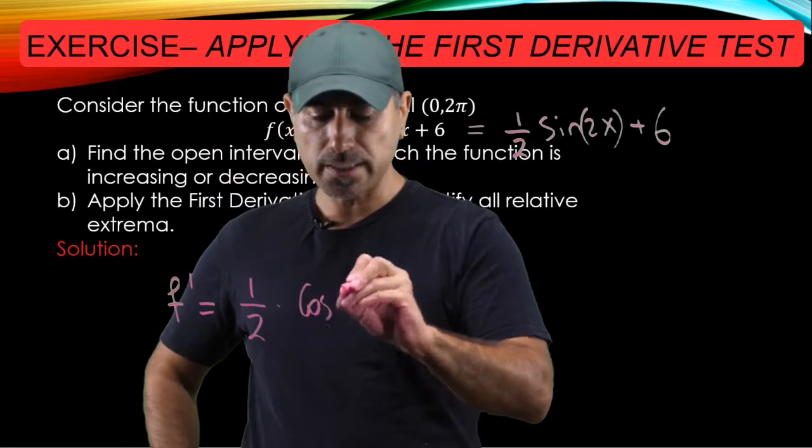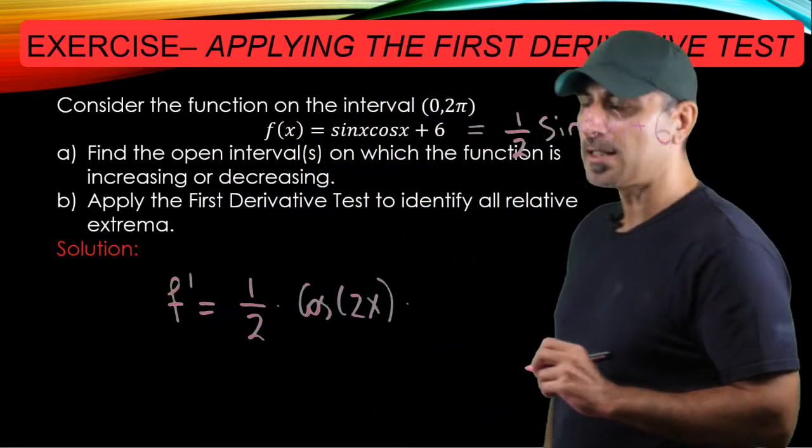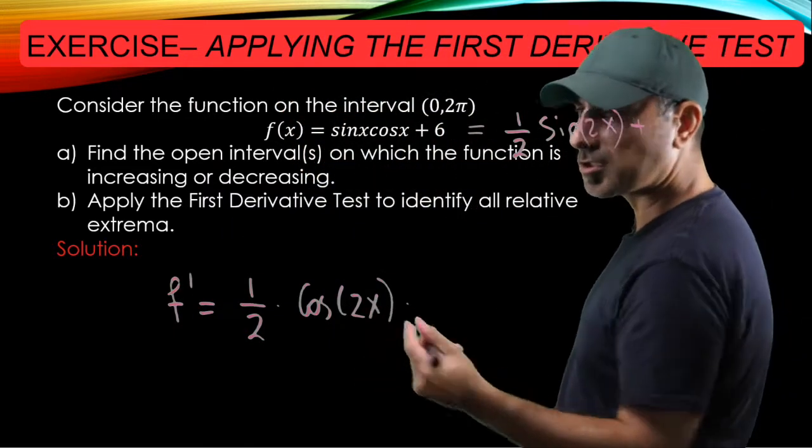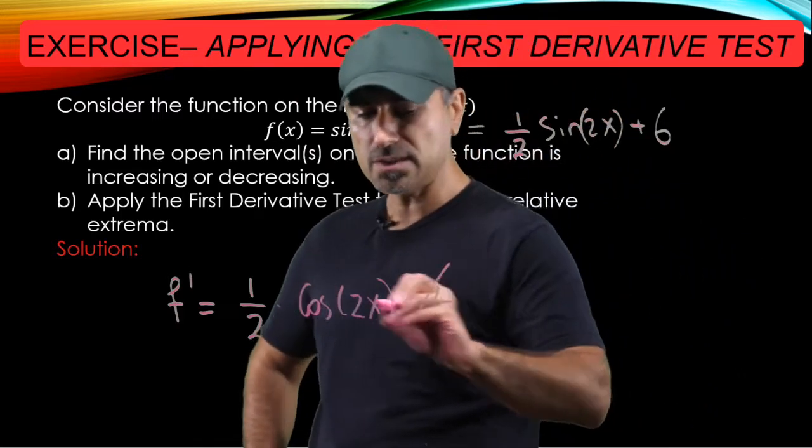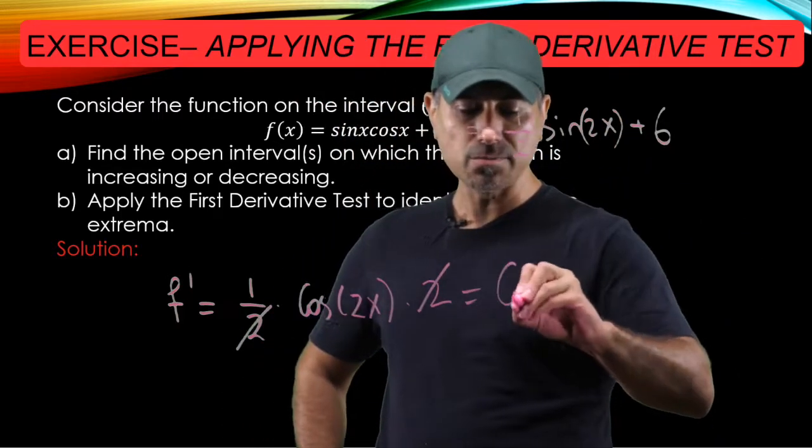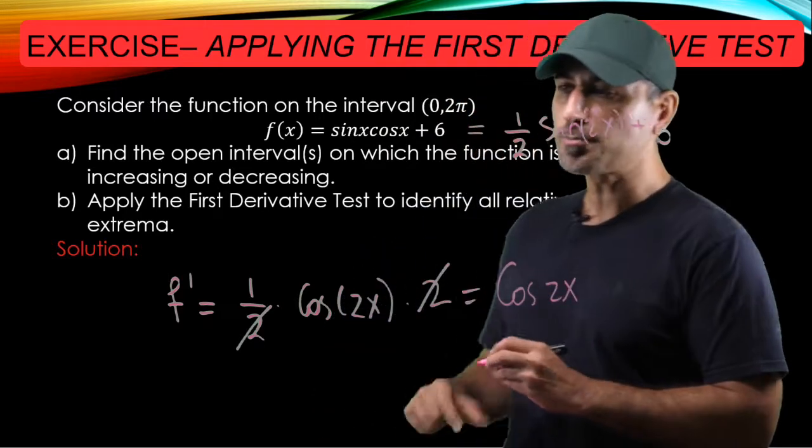And this is multiplied by the derivative of the inner function, which is 2. So as you see, f prime has a really nice expression, cosine 2x.